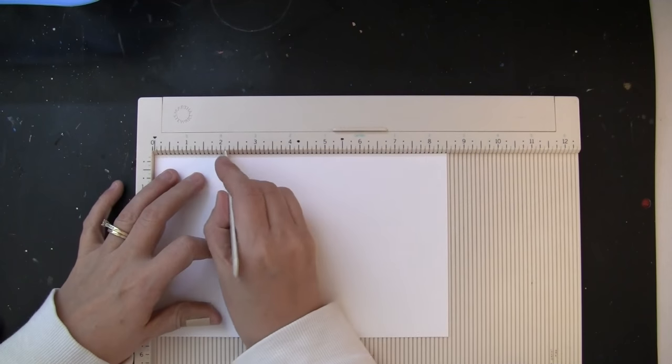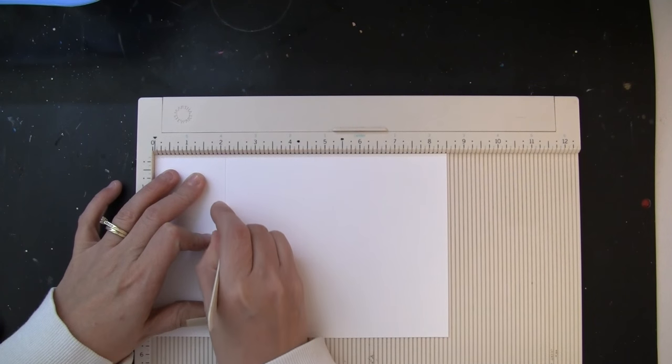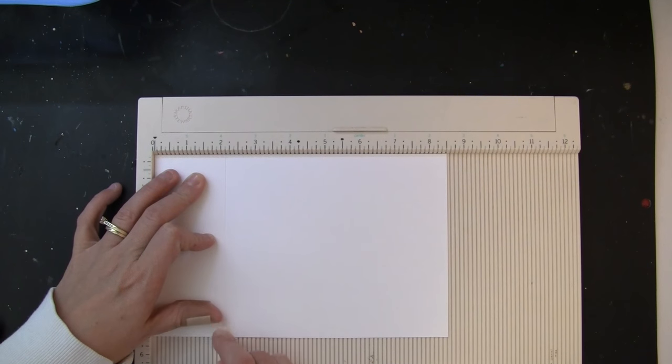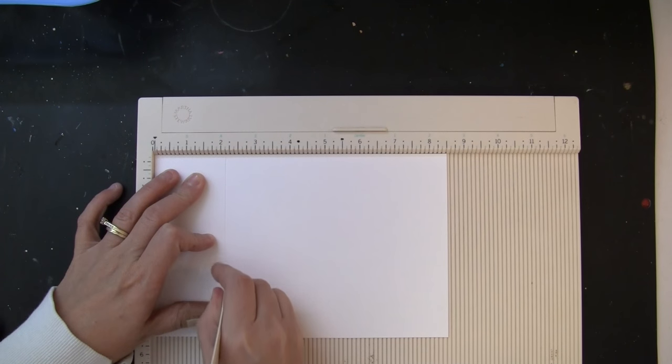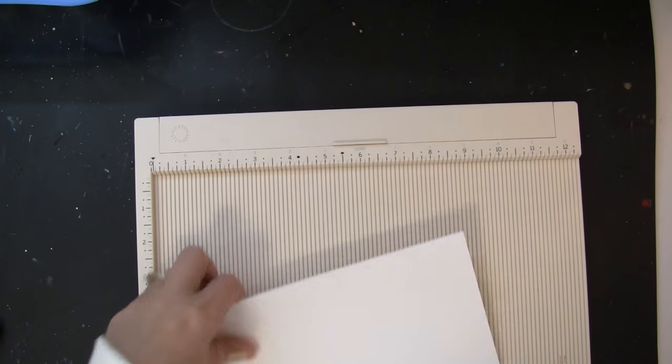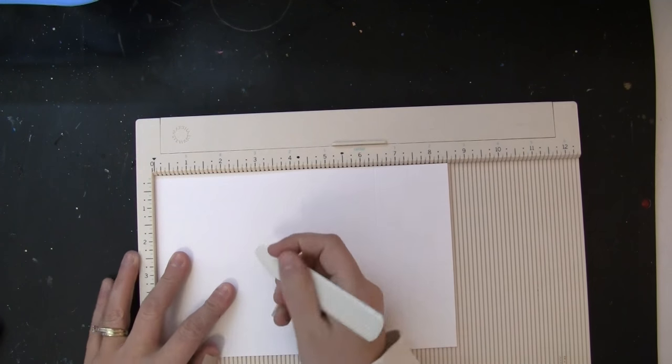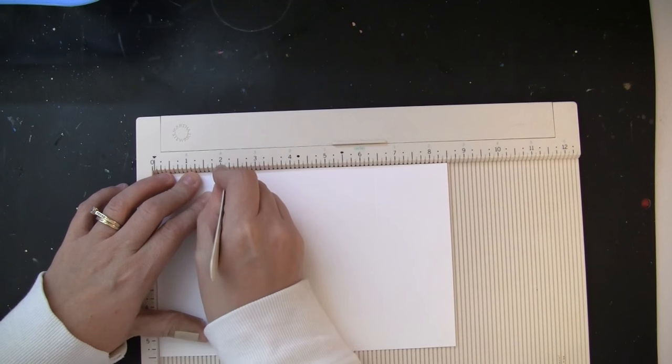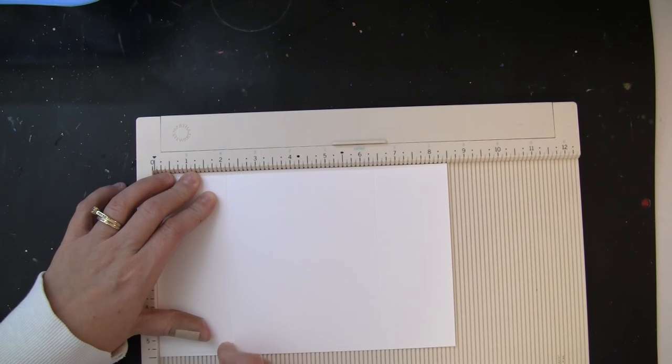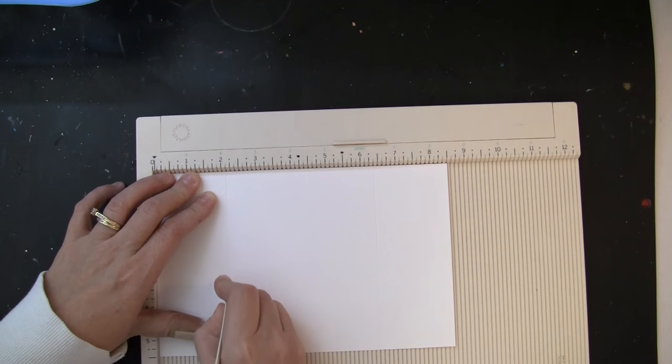And so to begin, I'm going to create my gatefold card base. My cardstock is 5 1⁄2 inches tall by 8 1⁄2 inches long, and I'm just scoring here at 2 1⁄8 inches, and I'll just turn that cardstock and score again at the 2 1⁄8 inches. This is going to create my card base for the gatefold.